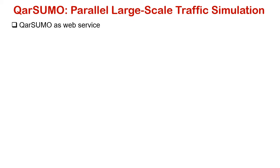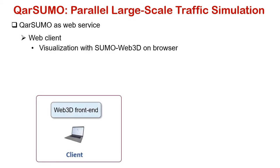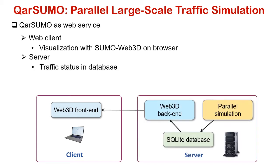CarSumo is designed to work as an easy-to-use web service by extending the open-source Sumo Web3D project. Users submit simulation tasks on their laptop within a browser, initiating remote parallel CarSumo simulation on a server. The simulation results, such as vehicle and traffic-light states, are streamed to a circular database and then to the Web3D server.